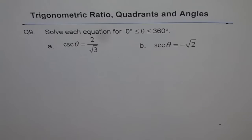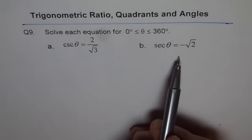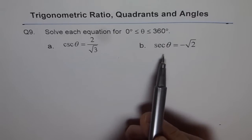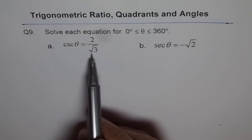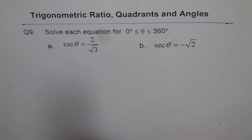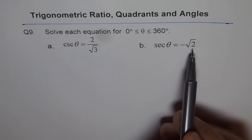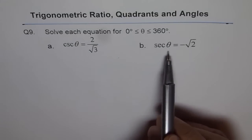You can copy this question and try to solve it yourself. These are reciprocal of our primary trigonometric ratios. Cosecant theta equals to 2 over square root 3 is reciprocal of sine theta, right? And secant theta equals to minus square root 2 is reciprocal of cos theta.